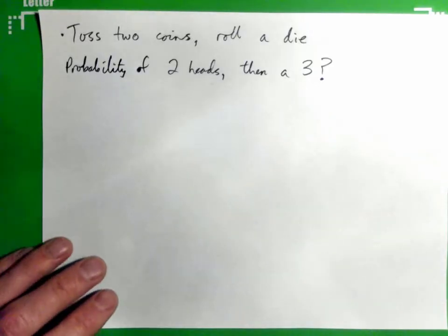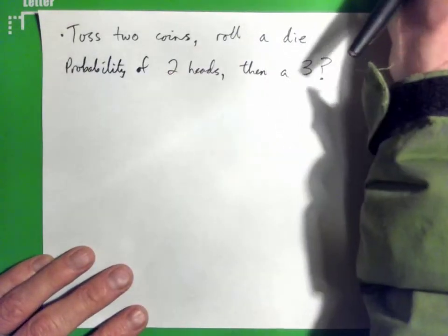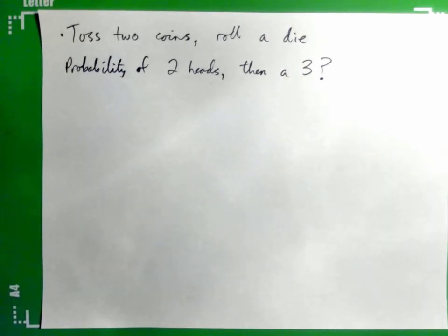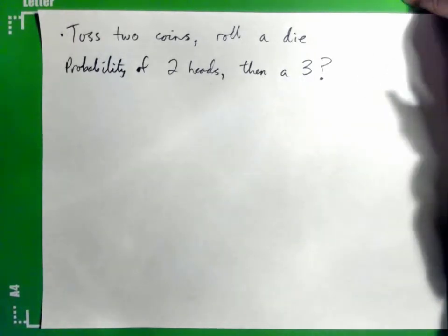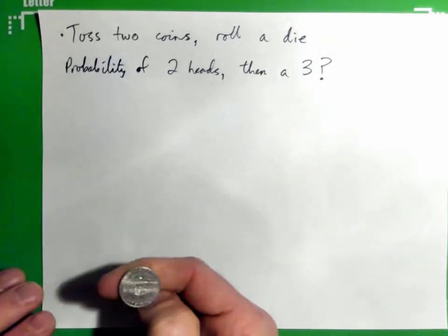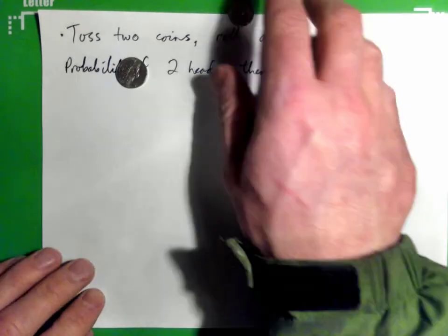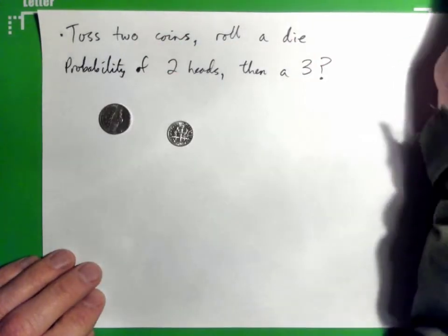In this example, we're going to toss two coins and then roll a die. We want to find the probability of getting two heads and then a three. Here's the first coin, we toss it, here's the second coin, we toss it, and then there's a die.